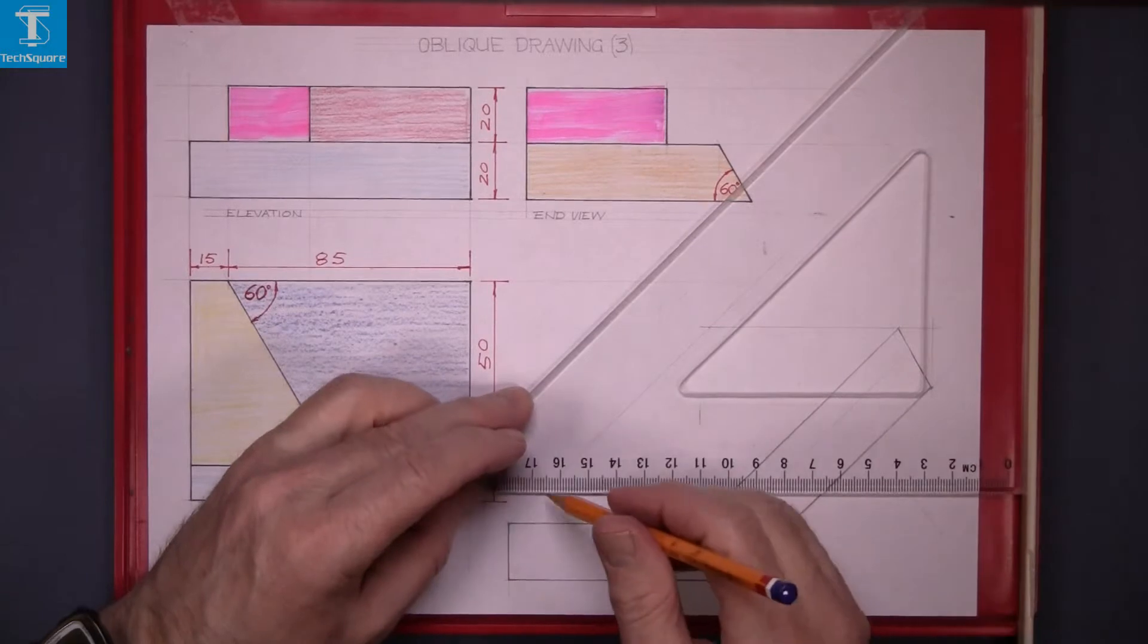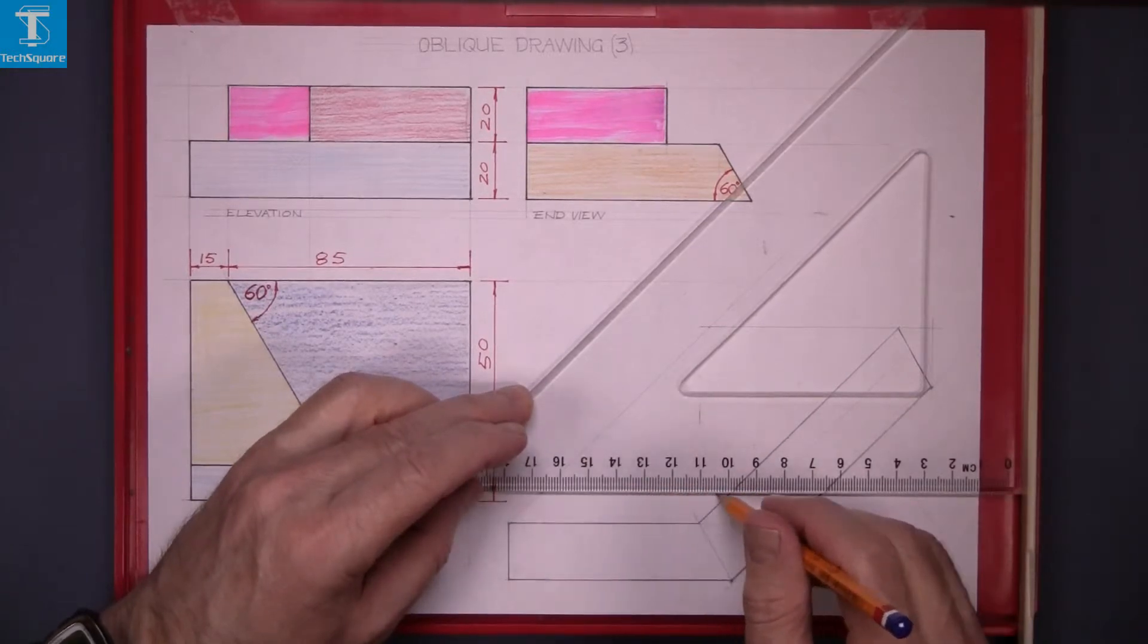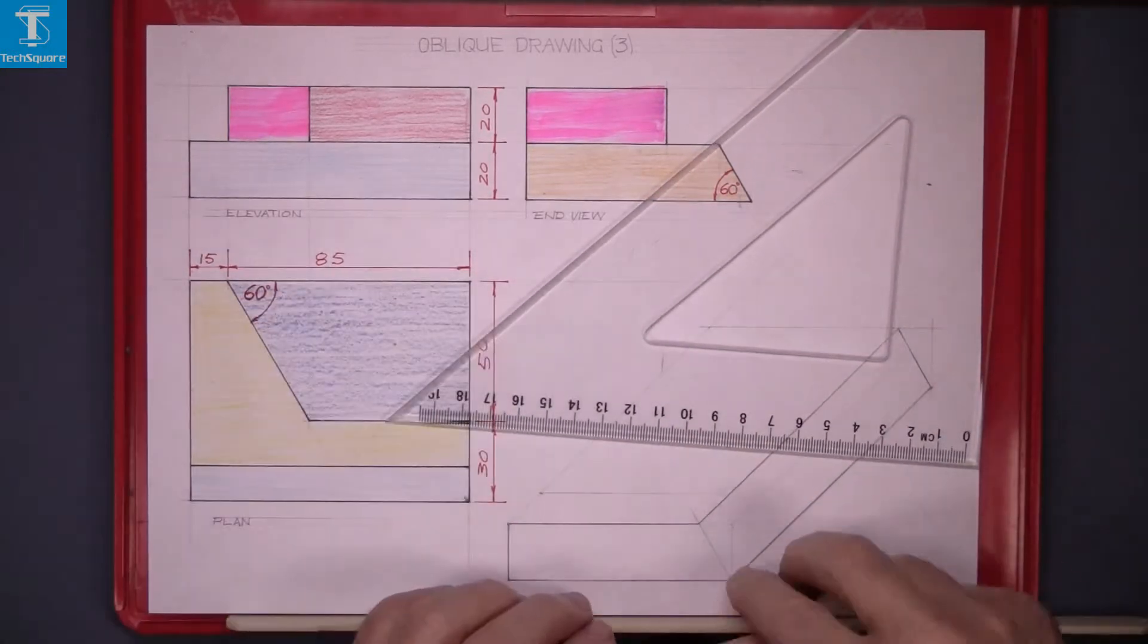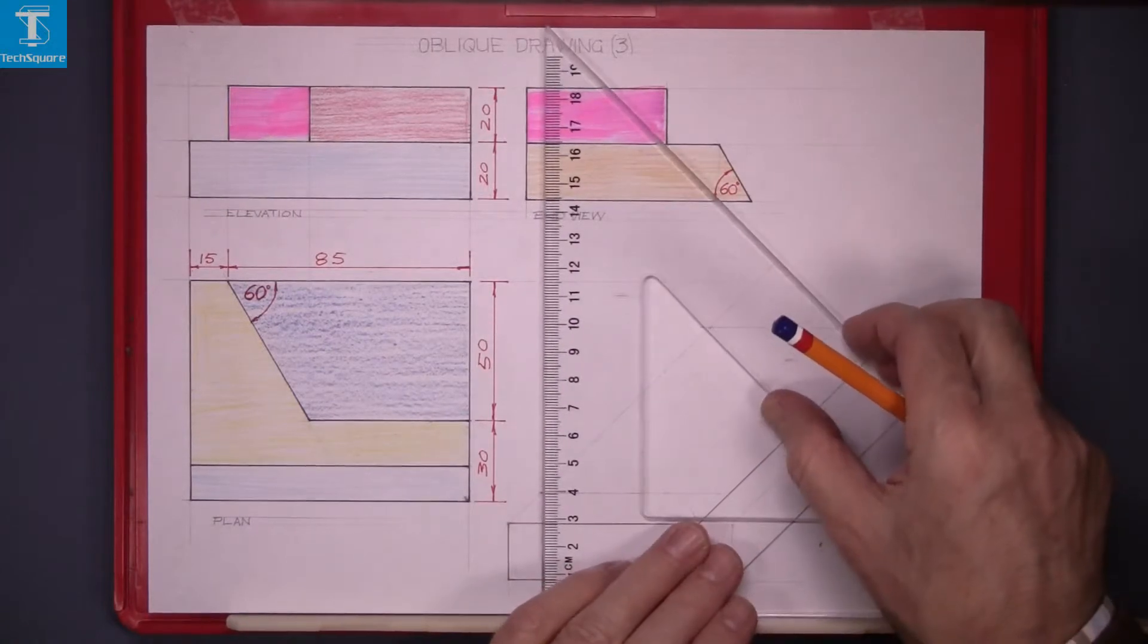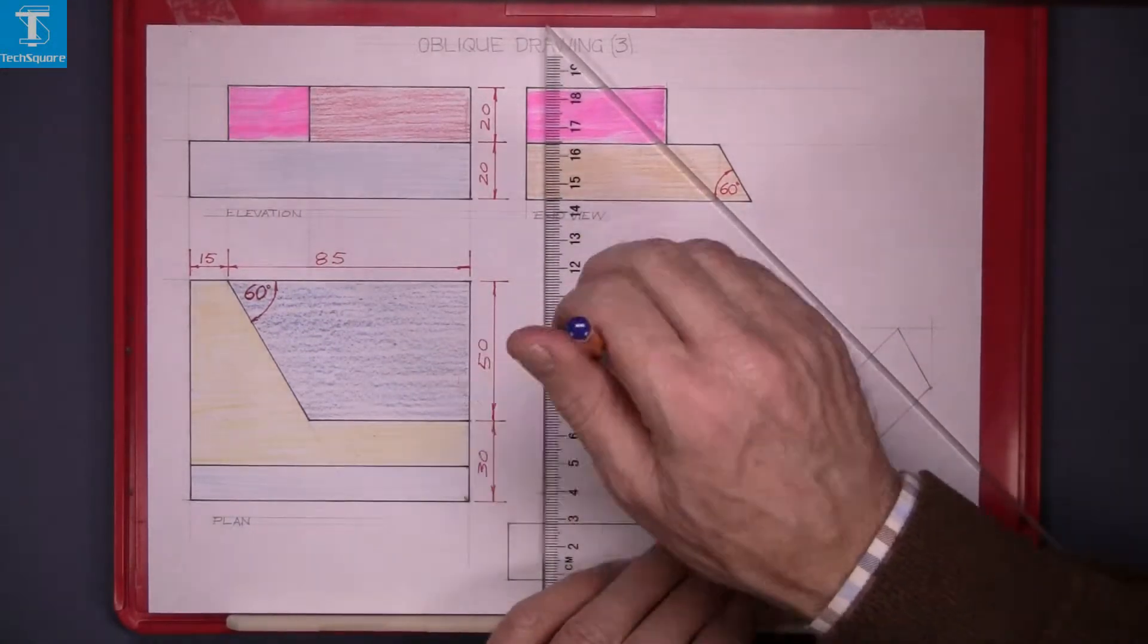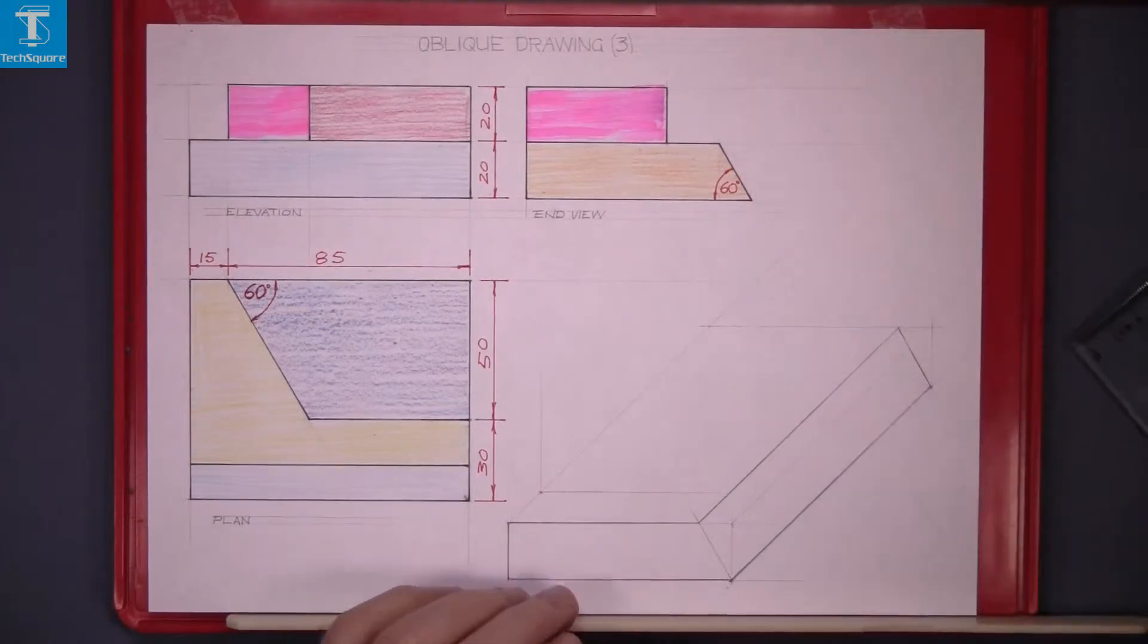Now draw that block in as if it's square with no angle on it. Just a square end on the piece, the height of that piece.